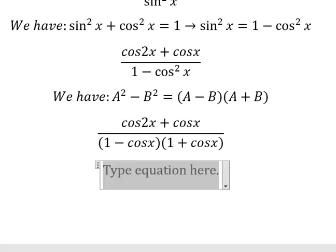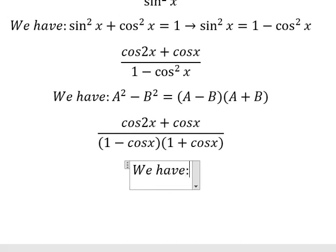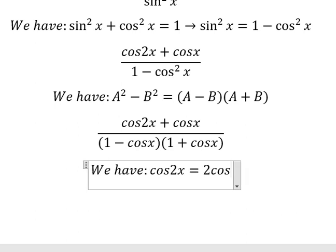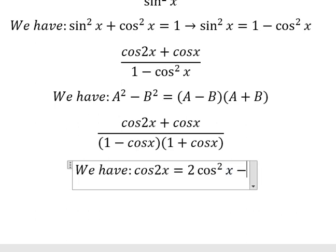Now we have the next one. Cosine 2x is about 2cos² x minus 1.